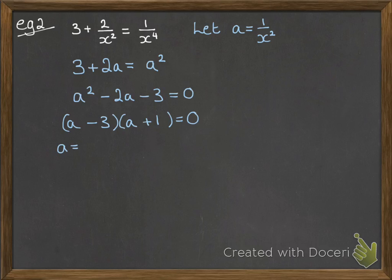So carrying on from there, we've got A equals 3 or A equals minus 1. At that point, we need to substitute back in what A was. So that means 1 over x squared equals 3. And carrying on with that, x squared would be a third. So x would be plus or minus the square root of a third.